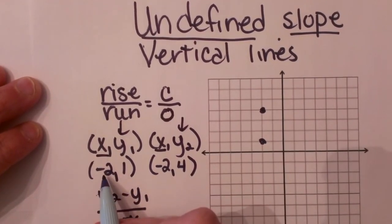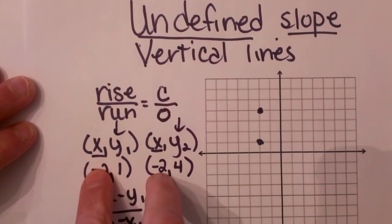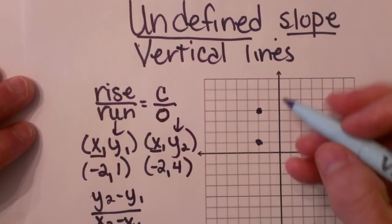So here is an example: negative 2, positive 1, and negative 2, 4. Our x coordinates are the same, but our y coordinates are different.